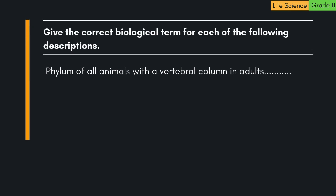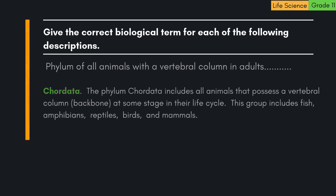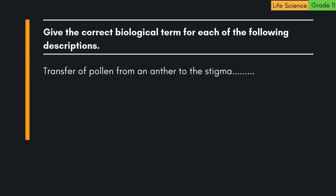The phylum of all animals with a vertebral column in adults is chordata. The phylum chordata includes all animals that possess a vertebral column, or backbone, at some stage in their life cycle. This group includes fish, amphibians, reptiles, birds, and mammals.